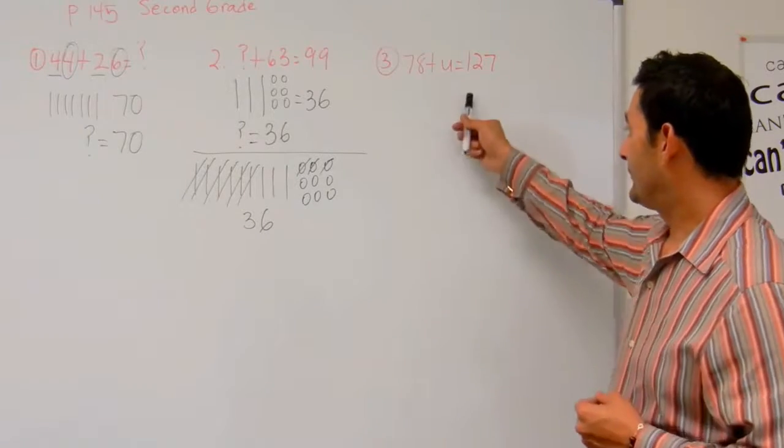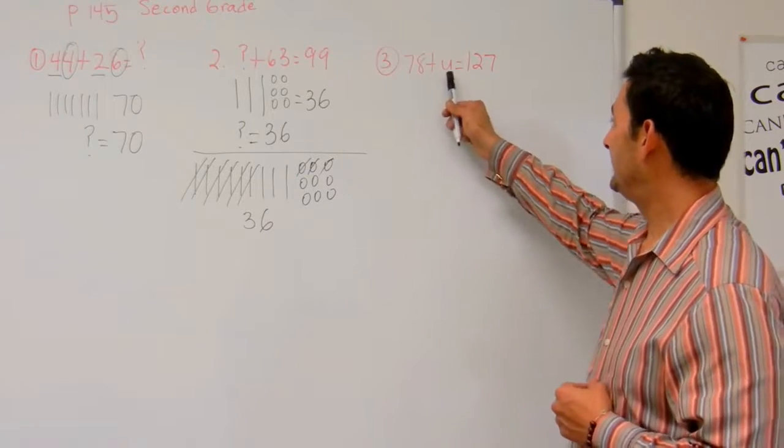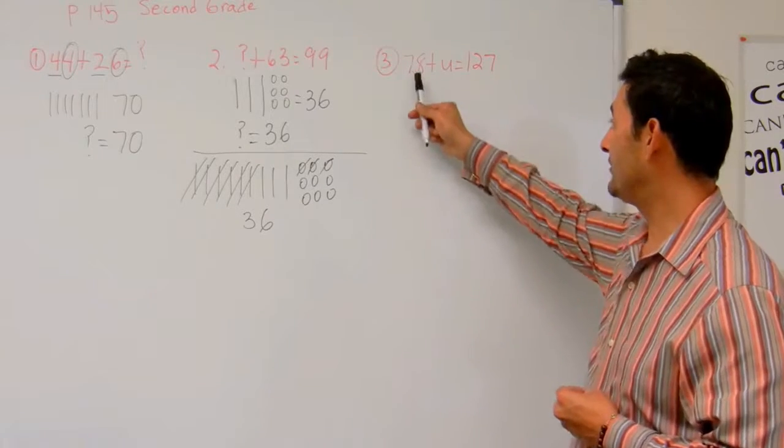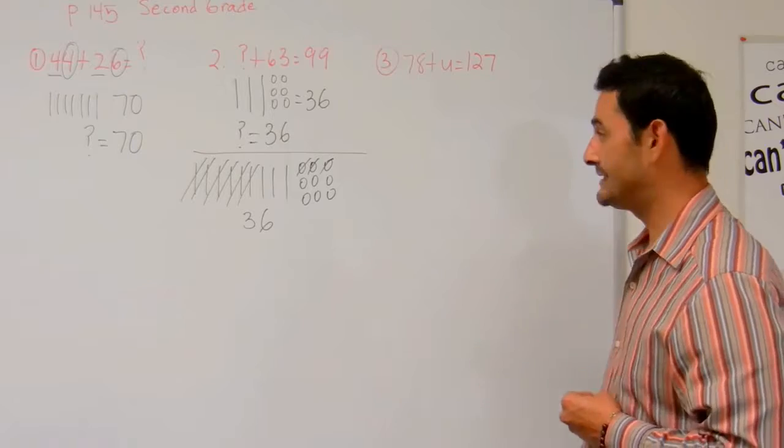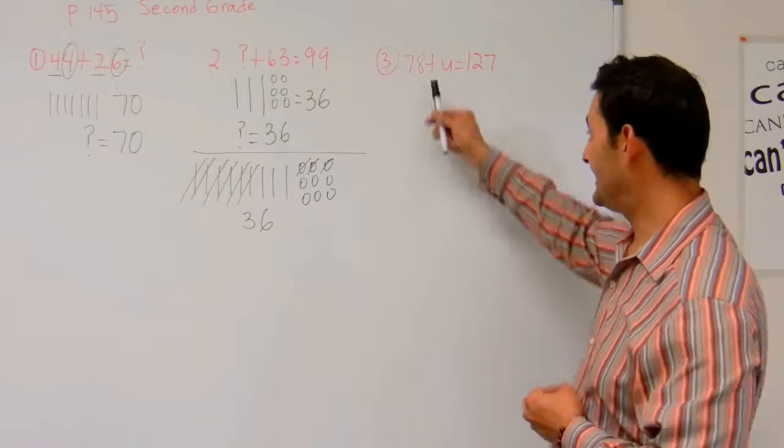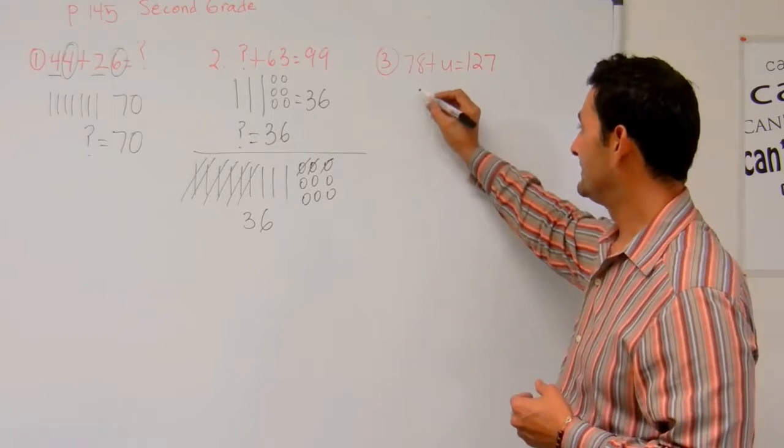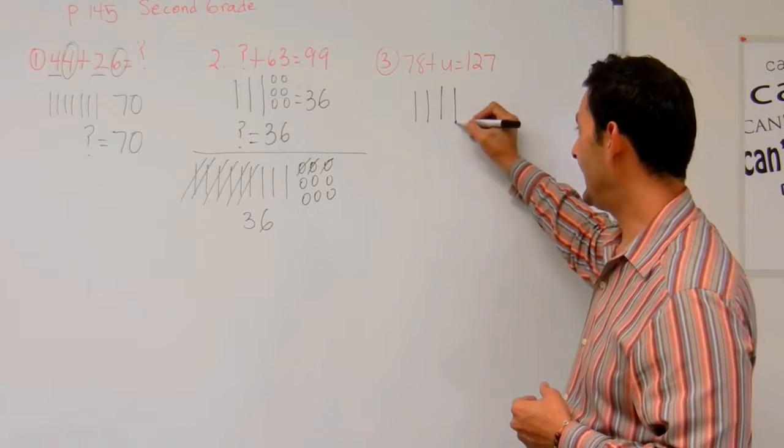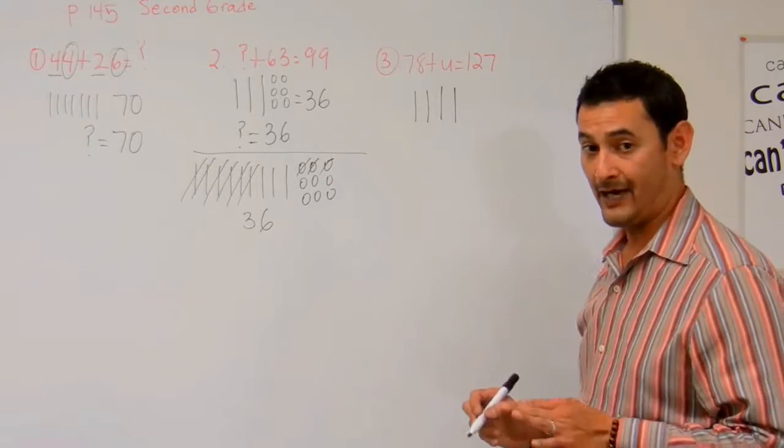Now let's take a look at number 3. Here I've got 78 plus U equals 127. We're going to solve for U. I'm going to count up to 127. I'm going to start with 78 and count: 78, 88, 98, 108, 118.